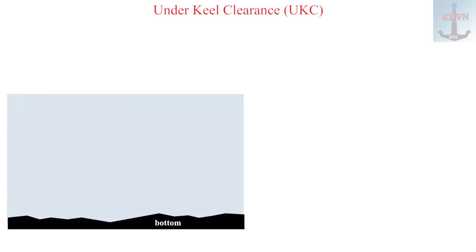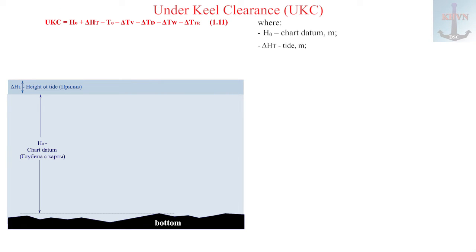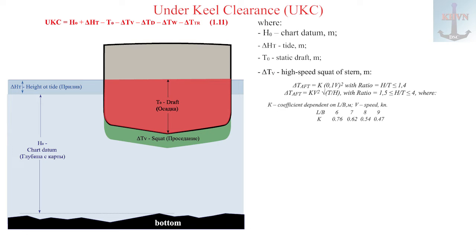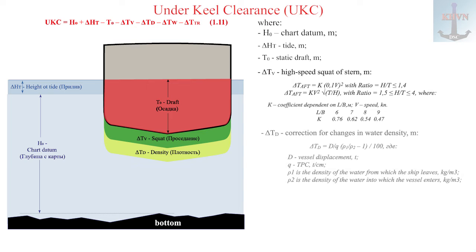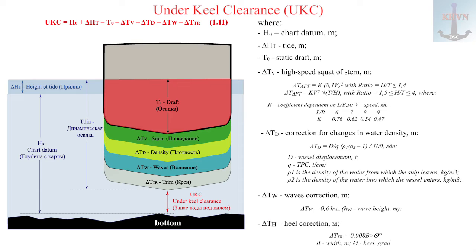Let's analyze what water under the keel depends on in practice, which is determined by formula 1.11 on the screen. Where UKC is under keel clearance in meters; H0 is the chart datum in meters; Delta HT is the tide in meters; T0 is the ship's draft in meters; Delta TV is the high-speed squat of stern in meters; Delta Td is the correction for changes in water density in meters; Delta Tw is the wave correction in meters; and Delta H is the heel correction in meters.